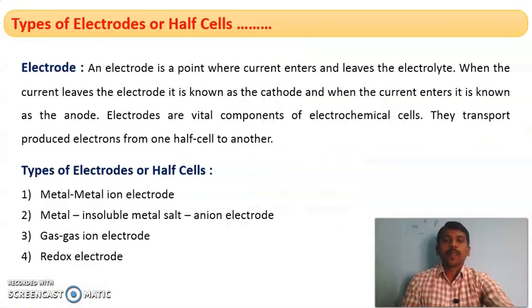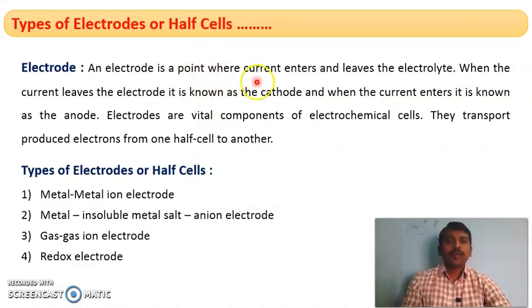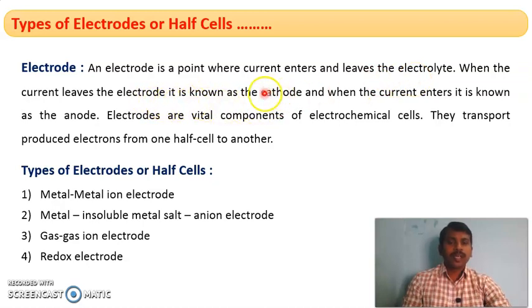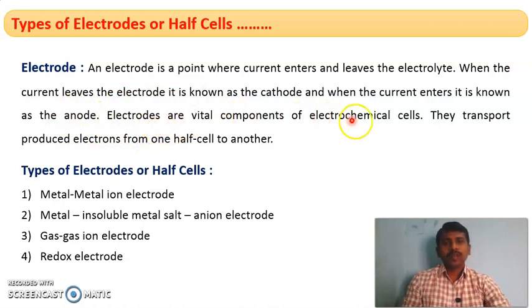Welcome to the session. In this session I am going to talk about electrodes and their types. Electrode is a point where current enters and leaves the electrolyte. When the current leaves the electrode it is known as cathode. When the current enters it is known as anode. Electrodes are the vital components of electrochemical cells.